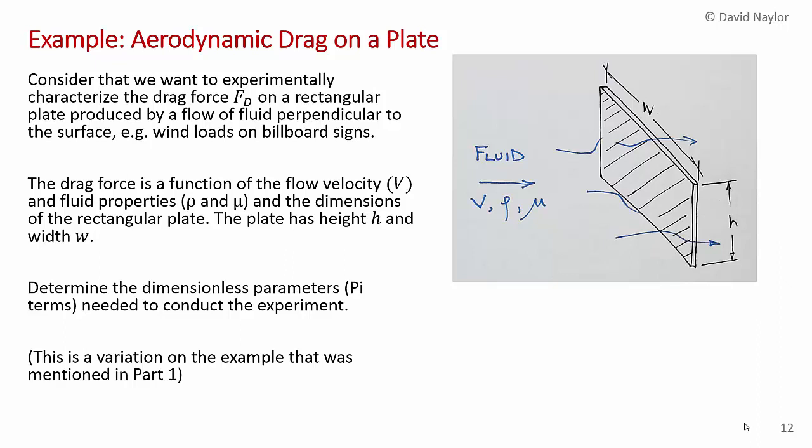We'll end this video with an example. Consider aerodynamic drag on a rectangular plate: we want to experimentally characterize the drag force — the so-called form drag fd — on a rectangular plate produced by the flow of fluid perpendicular to the surface. An application for this would be determining the wind load on billboard signs. You're told that the drag force is a function of the fluid velocity, fluid properties rho and mu, and the dimensions of the rectangular plate — height h and width w. This is a variation on the example discussed in Part 1.